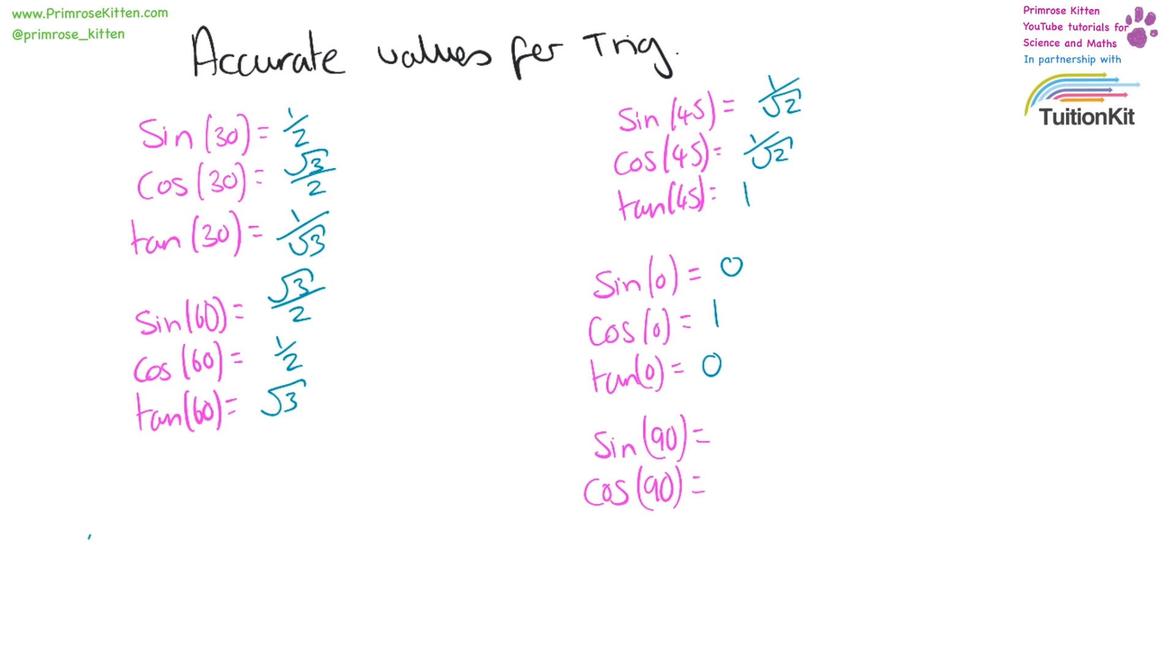Sine of 90 is one, cos of 90 is zero, and there is no tan of 90 because that doesn't touch the line.